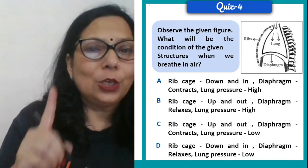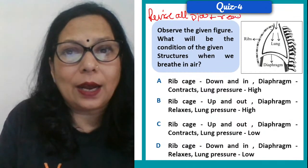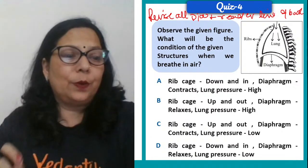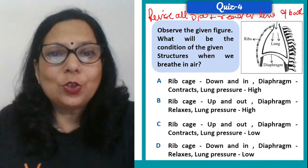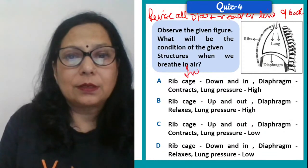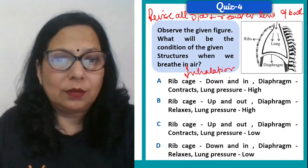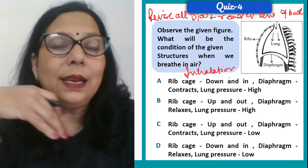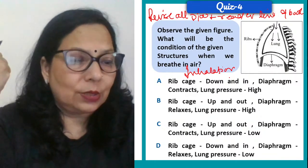Question 4: Observe the diagram. You need to revise all diagrams and read every line of the book. The diagram shows the ribcage, the diaphragm, and the lungs. What will be the condition of these structures when we breathe in air — inhalation? The ribcage will move up and out. When the diaphragm contracts, it moves down towards the abdomen — it becomes flat — and this fills in air like inhalation. Air needs to be pulled in through pressure.